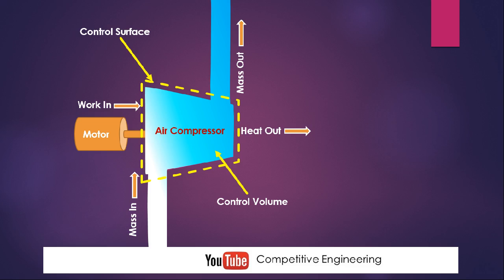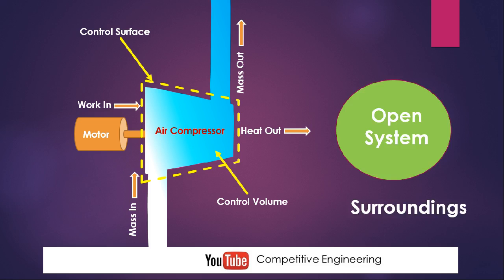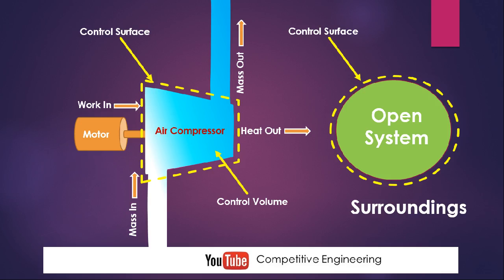Most engineering applications are open systems — like engines, compressors, turbines, pumps, etc. So for analyzing those kinds of systems, we use the concept of control volume. Both energy and mass cross the control surface. In an open system there will be mass interaction and energy interaction between the system and surroundings, and we denote a fixed volume with the dotted line — that is the control surface — and the volume inside is the control volume.